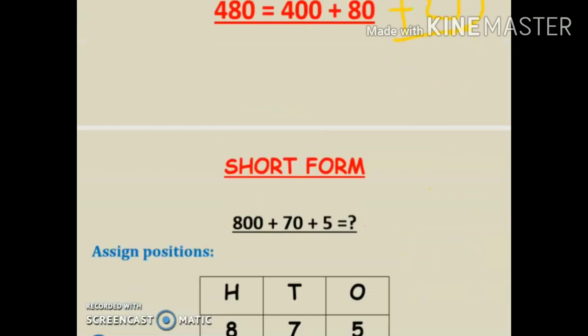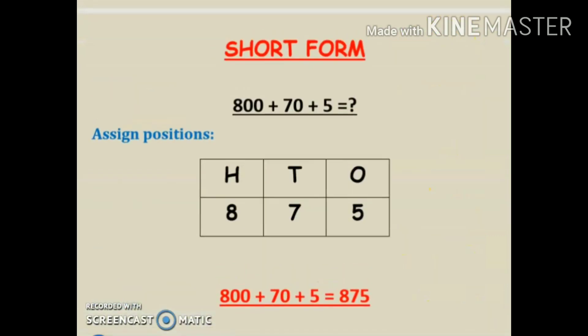I hope you are clear with expanded form. Now let's come to short form. Short form is the reverse of expanded form — here we are given the expanded form and we have to write down the number. We have to form the number. Here we are given eight hundred plus seventy plus five.